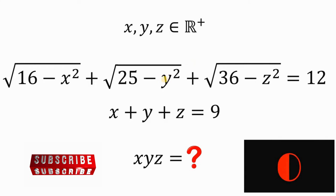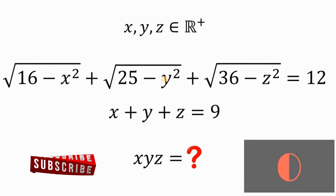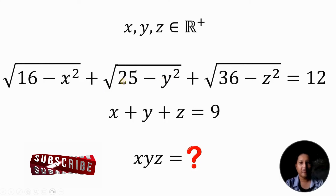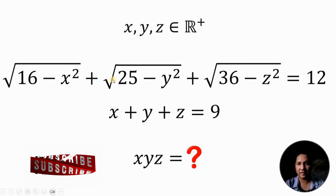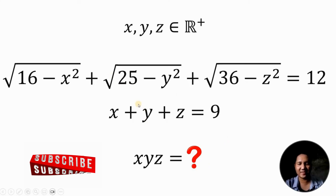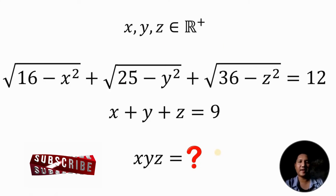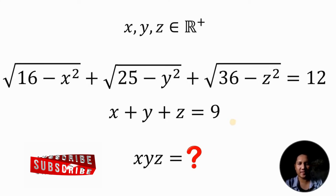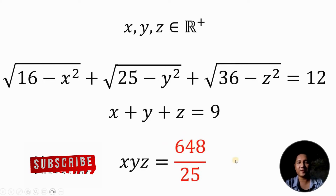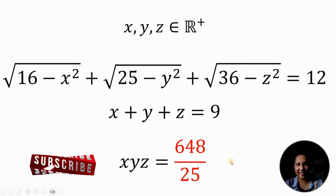And now, let's answer this question together. Our goal is to solve for the product of x, y, and z, given these two equations in three unknowns, where x, y, and z are all positive real numbers. Our answer to this question is simply equivalent to 648 over 25. Now the question is, how do we get this answer?